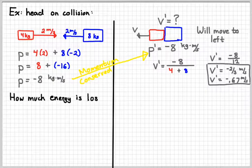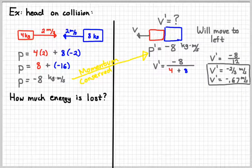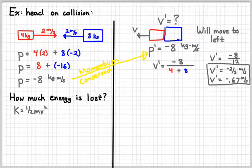We might also want to know how much energy is lost. So what I'm going to do is figure out how much kinetic energy we started with, and then how much kinetic energy we ended with, and subtract. So remember, kinetic energy is one-half mv squared.